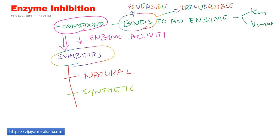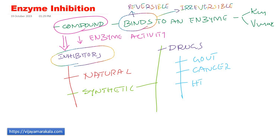The synthetic inhibitors are of great help especially in treating many disorders. They could be used as drugs for treating gout, cancer, hypertension, and infection. These enzyme inhibitors can be used as antibiotics and even anti-depressants. These enzyme inhibitors have great clinical significance for treating many types of disease.